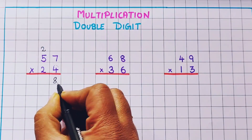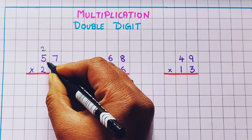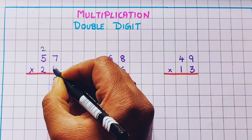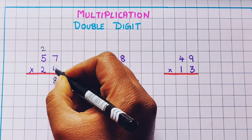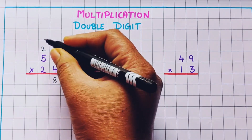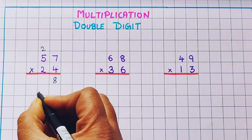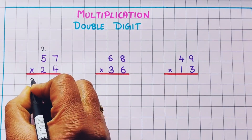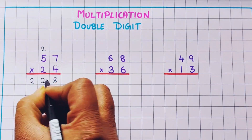Now 4 into 5 — 4 fives are 20, plus 2 is 22. So here I will write 22.